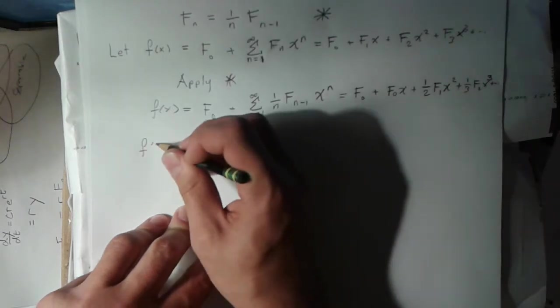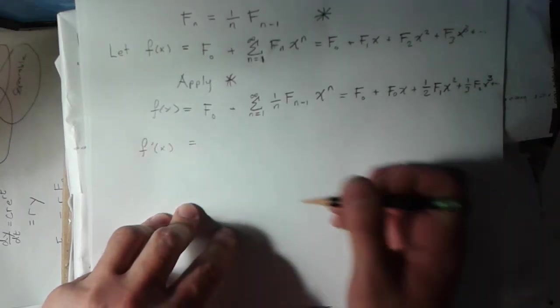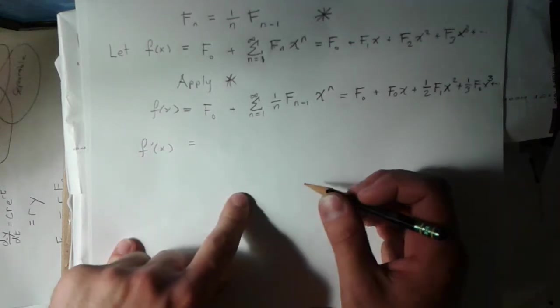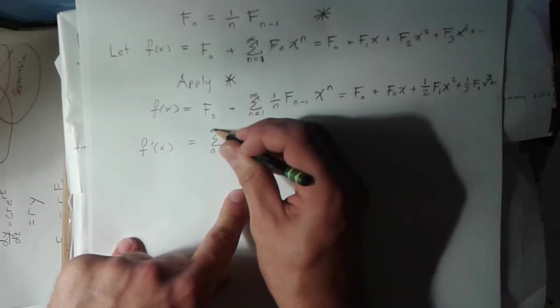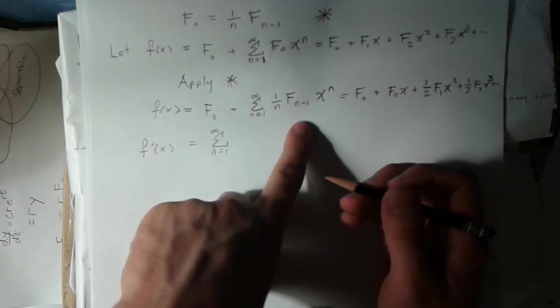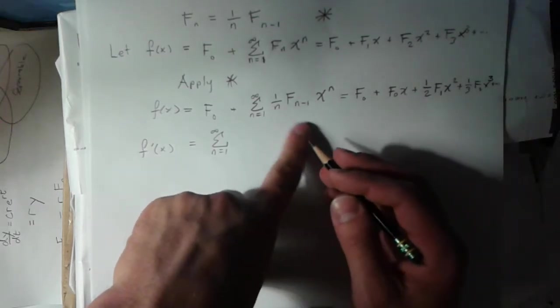This is going to be—this term is going to go away, that's constant. And I can do a term by term differentiation here just because this is just a long sum of numbers.